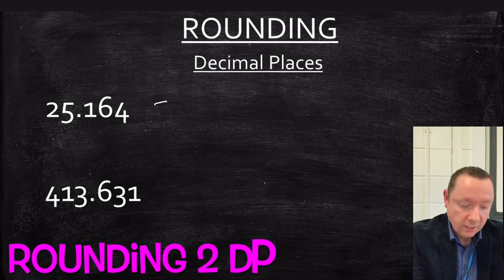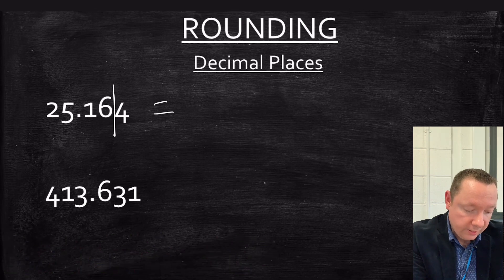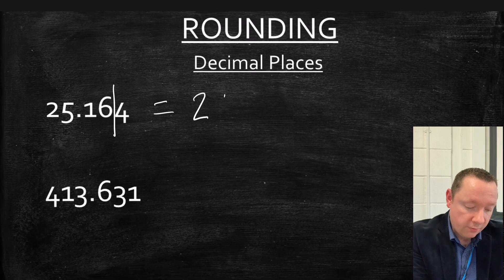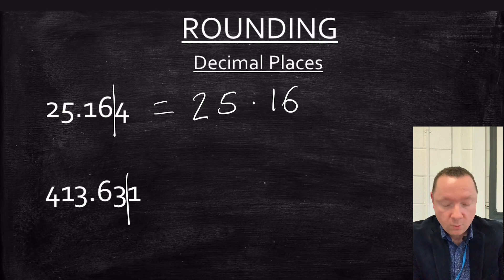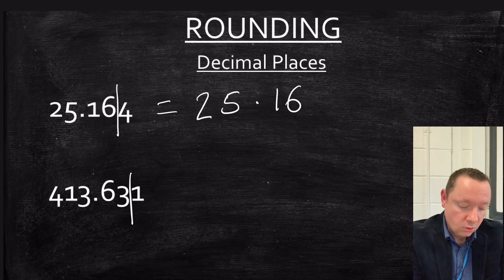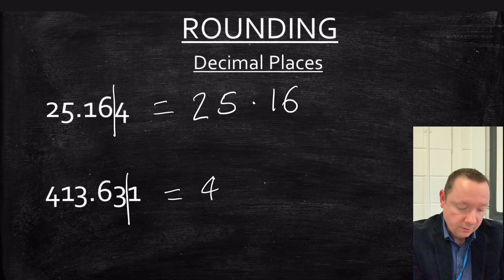If we wanted to round that to two decimal places, then we could imagine we're going to cut it here, and we need to round up because four is less than five, so it's 25.16. The second one, 413.631, again to two decimal places. If I cut it here, then one tells me I need to round down, so it's 413.63.